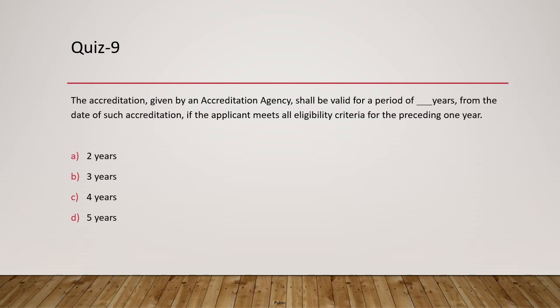Question 9: The accreditation given by an accreditation agency to an accredited investor shall be valid for a period of 2 years from the date of accreditation, if the applicant meets all eligibility criteria for the preceding 1 year. There is another condition where validity is 3 years, but that applies under different conditions from what is described here.